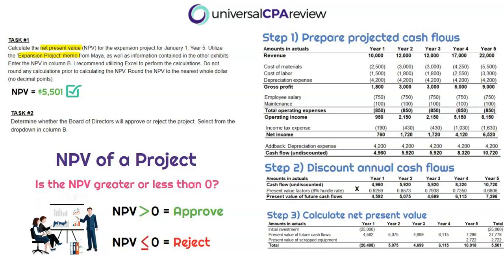For task two, we need to determine whether the board of directors will approve or reject the project. As stated in the original prompt, as long as the net present value is greater than zero, the future cash inflows exceed the future cash outflows. In this case, we had a positive net present value of $5,501 — that's greater than zero, so the project will be approved by the board of directors.